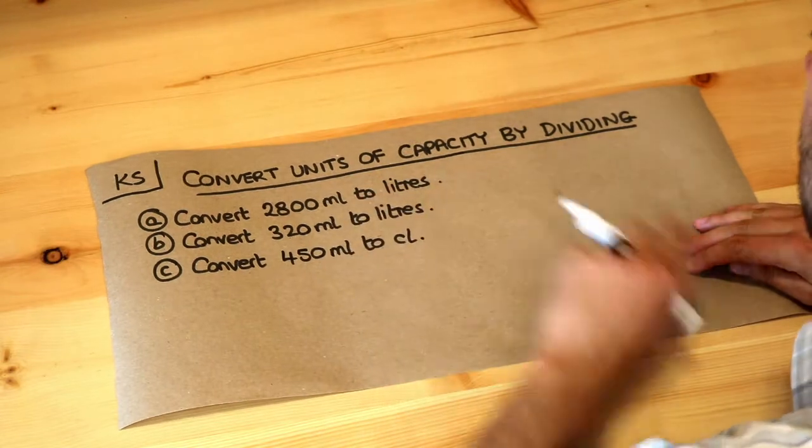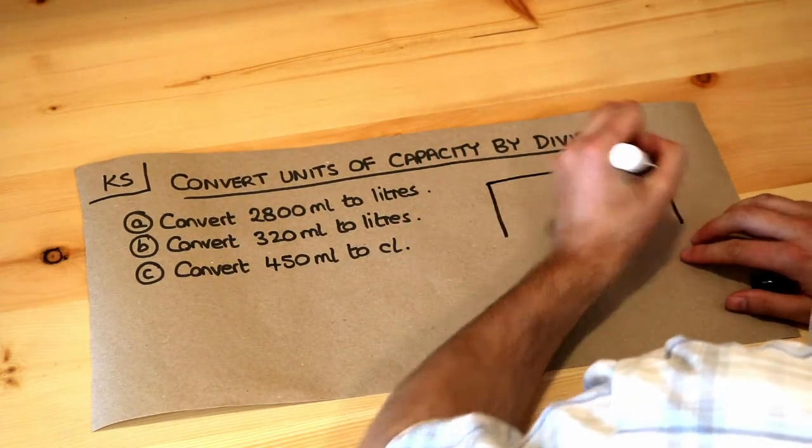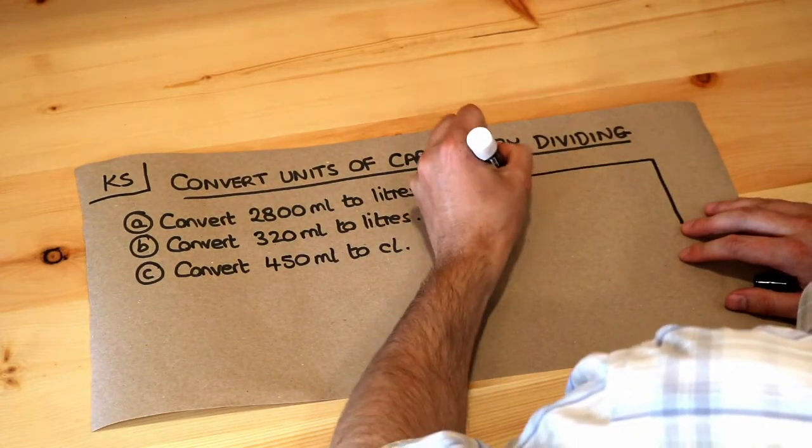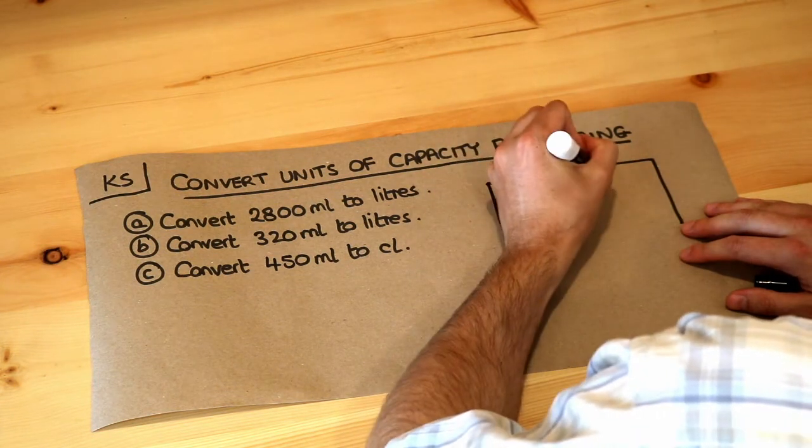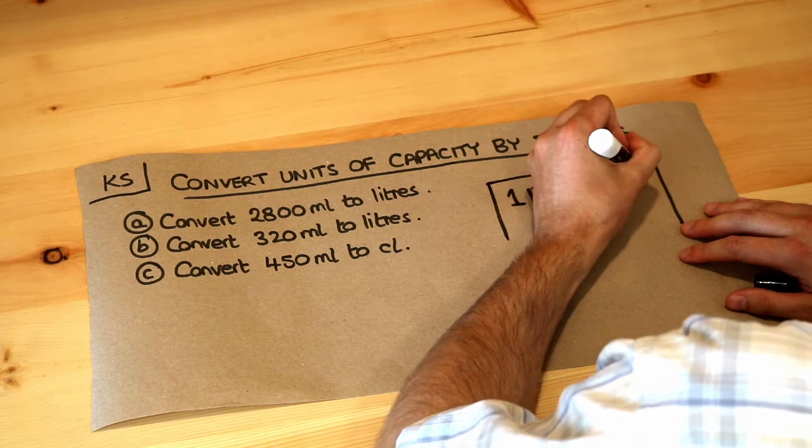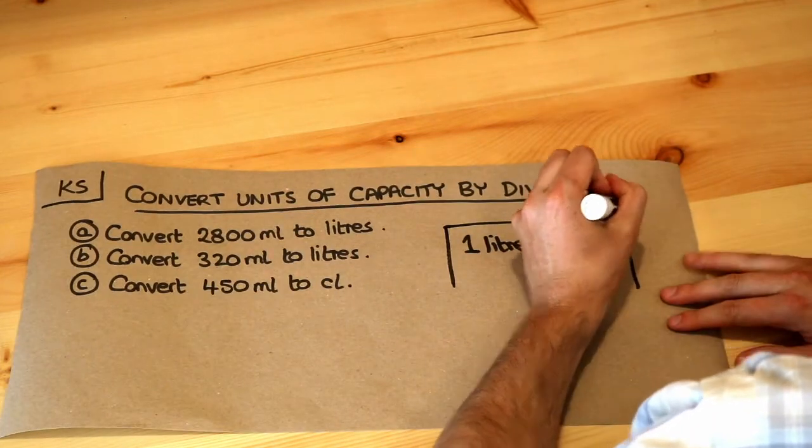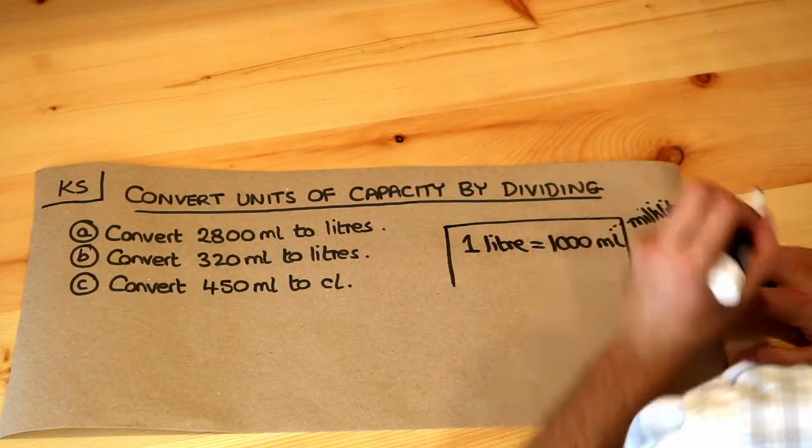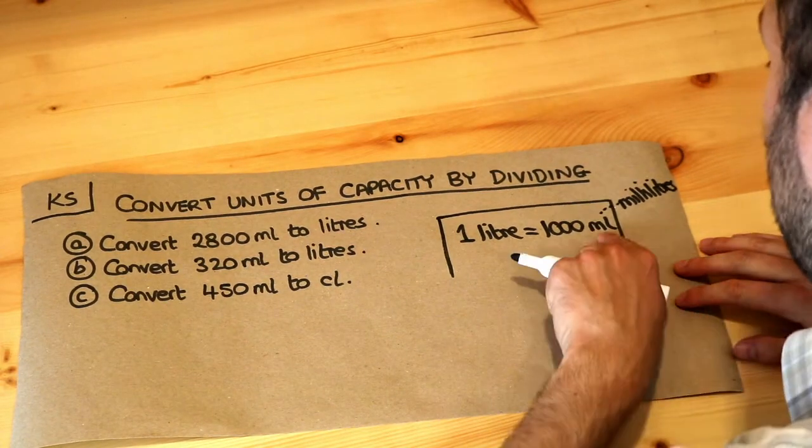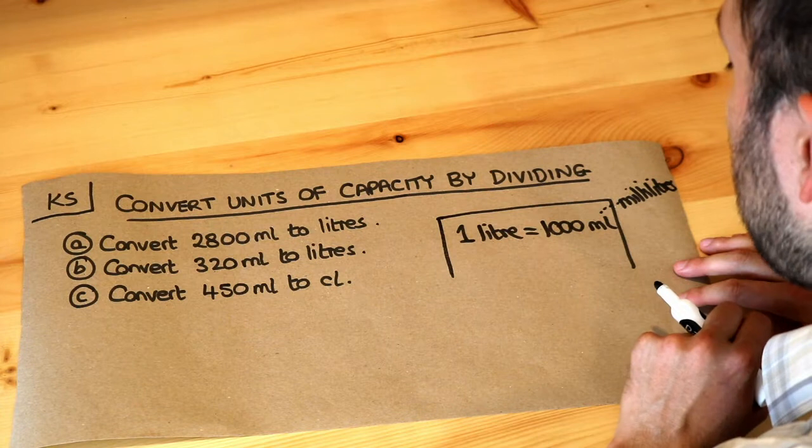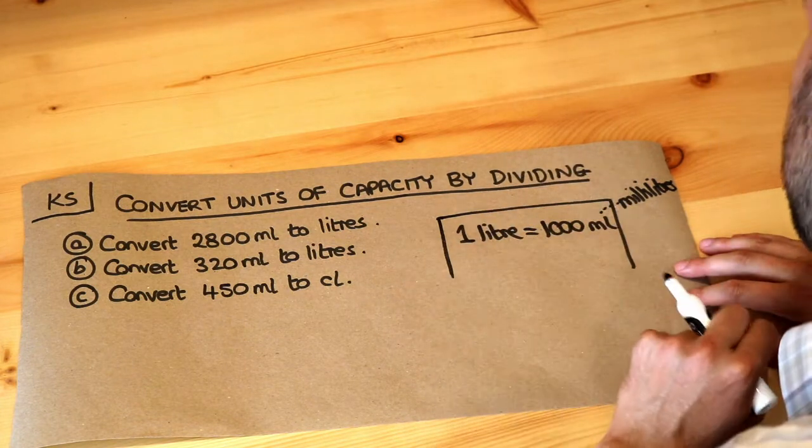Now let's think about the conversions involved in these questions. You just need to know that if you have one litre, that is equal to a thousand millilitres. So mL is short for millilitres, and milli just means a thousandth. So one millilitre is a thousandth of a litre, and one litre is a thousand millilitres.